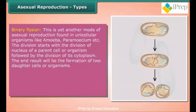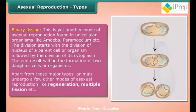Binary fission is another mode of asexual reproduction found in unicellular organisms like amoeba and paramecium. The division starts with the division of the nucleus of the parent cell, followed by the division of its cytoplasm. The end result is the formation of two daughter cells or organisms. Apart from these, animals also undergo other modes of asexual reproduction like regeneration and multiple fission.